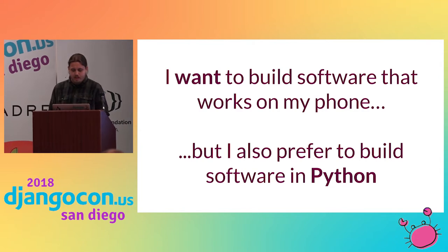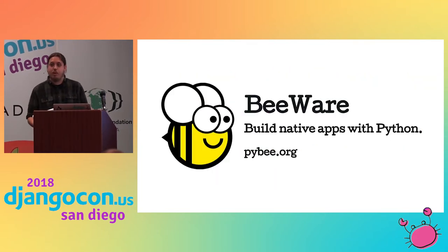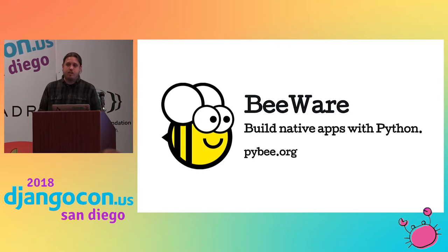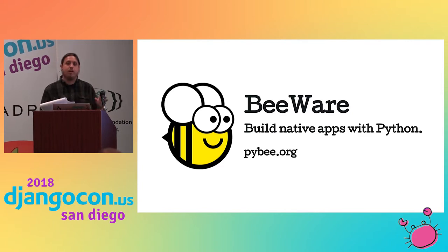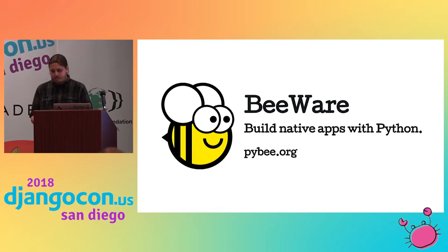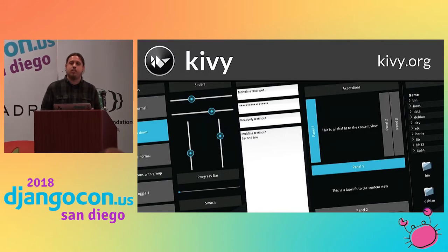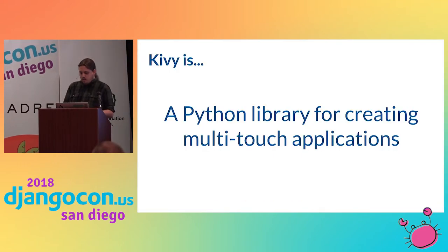So what options do we have? The first one I have to mention is the BeeWare project — aimed at building applications in Python across multiple platforms using native UIs. The BeeWare developers are here at DjangoCon: Russ Keith-Magee, Phillip James, Katie McLaughlin. They're going to be sprinting on it — definitely seek them out. And that brings us to Kivy, which is a framework for building multi-touch applications across platforms.